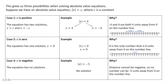This gives us three possibilities when solving absolute value equations. Suppose we're solving the equation |x| = c, where c is some constant. If c is positive, we're going to have two solutions. For example, if we have |x| = 4, that means x = 4 or x = negative 4.